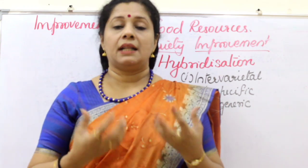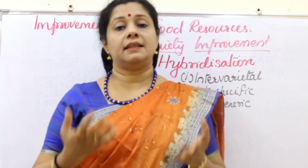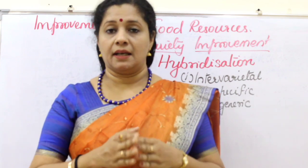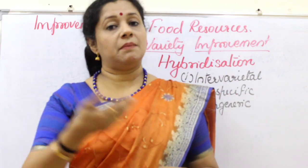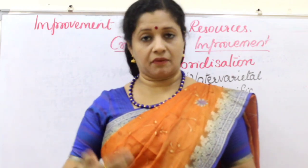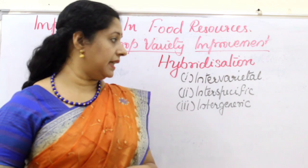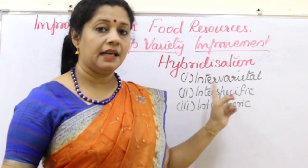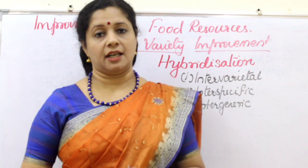Once the seeds are growing, we might get these two qualities combined in the same plant. That plant will then be cultivated for the next generation. This process can be of three types: inter-varietal, inter-specific, and inter-generic.